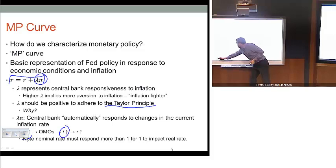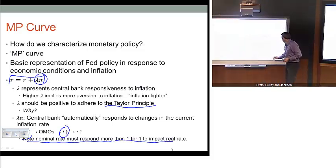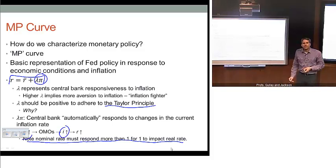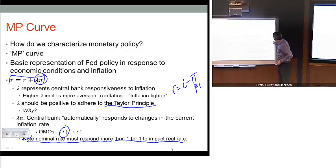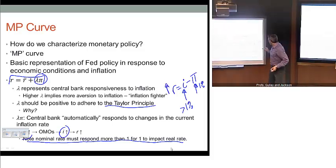The kicker here is it's got to be the case that the nominal interest rate responds more than one-for-one to impact the real interest rate. This gets back to the Taylor principle: if inflation goes up 1 percentage point, monetary policy must operate to raise the nominal interest rate more than 1% so the real interest rate rises. Because remember, the real interest rate is the difference between the nominal interest rate and the inflation rate. So in order to push the real rate up, if inflation goes up 1%, the nominal interest rate has to go up by more than 1%.